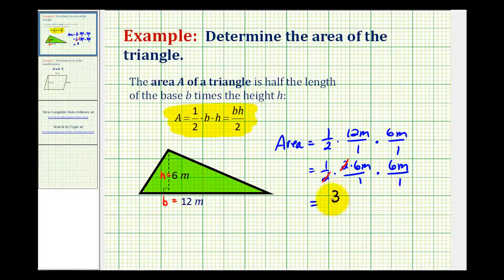Notice how we'll have thirty-six meters squared all over one, which is just thirty-six square meters. So exactly thirty-six square meters will fit inside this green region or inside this triangle, which is our area.